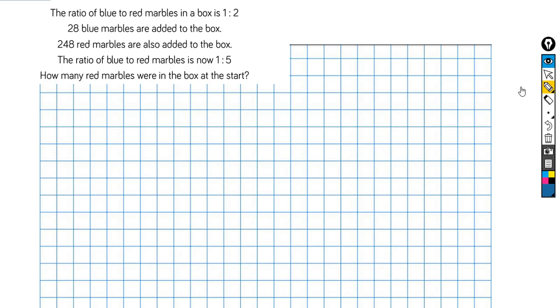The ratio of blue to red marbles in a box is 1 to 2. 28 blue marbles are added to the box. 248 red marbles are also added to the box, and the ratio of blue to red marbles is now 1 to 5. We are asked how many red marbles were in the box at the start.